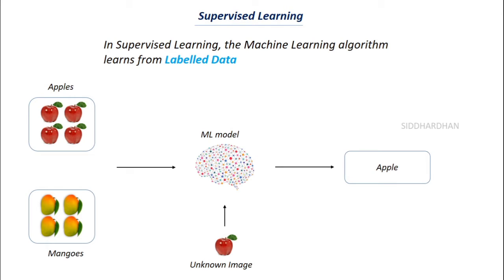Once the model has learned from the data, when you give it an unknown image it can correctly predict whether it is an apple or a mango. The important point here is that we train the model with labeled data. In unsupervised learning, by contrast, we don't give the algorithm the labels — that is the key difference between supervised and unsupervised learning.